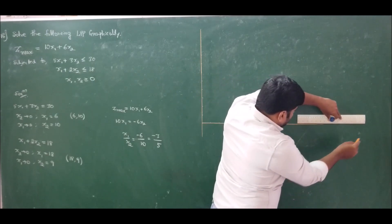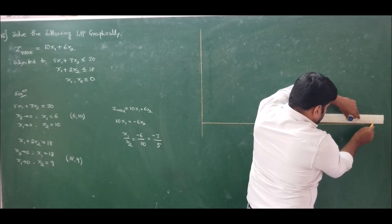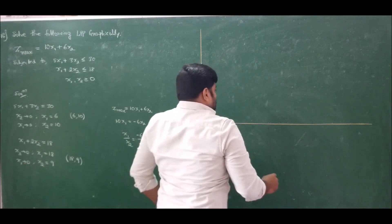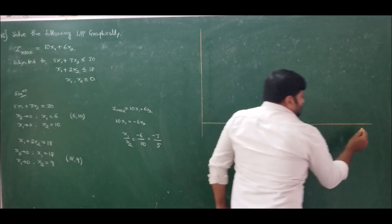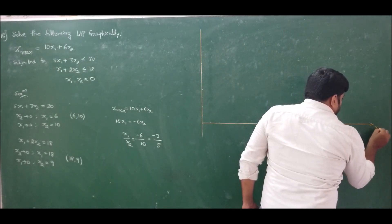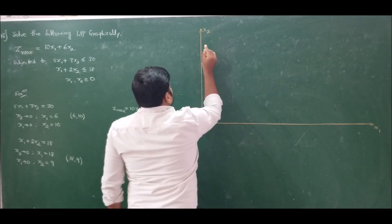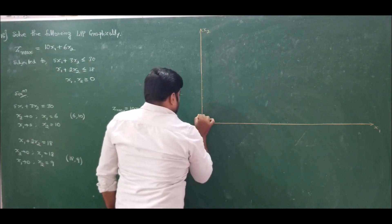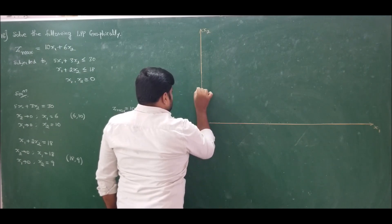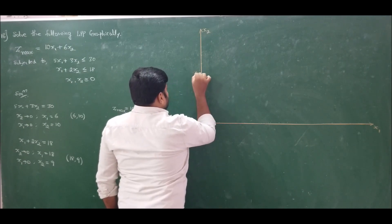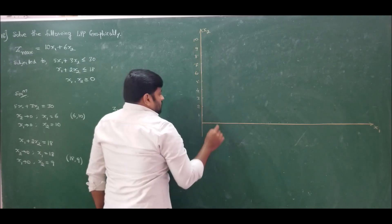Draw the x and y axes. In linear programming problems, the x-axis always represents variable x1 and the y-axis always represents variable x2. On the y-axis, we mark units from 1 to 10, and on the x-axis we mark units from 1 to 18.